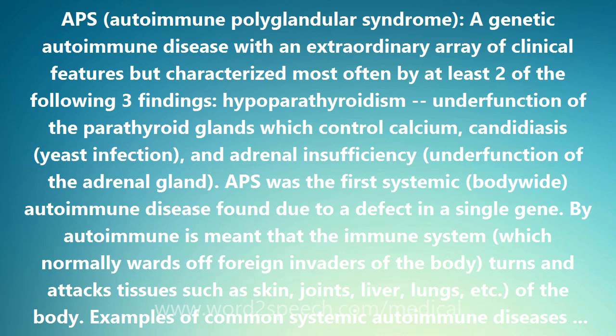Other features of APS are total baldness, alopecia totalis; inflammation of the cornea and whites of the eye, keratoconjunctivitis; underdevelopment, hypoplasia, of the enamel of the teeth; childhood onset moniliasis, yeast infection; juvenile onset pernicious anemia; gastrointestinal problems including malabsorption and diarrhea; and chronic active hepatitis.